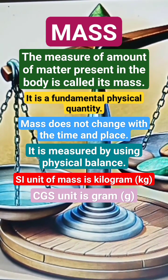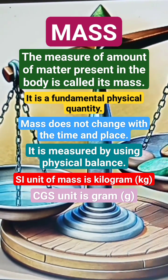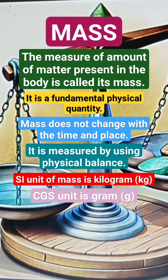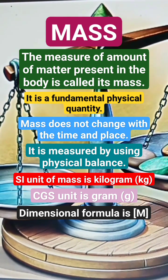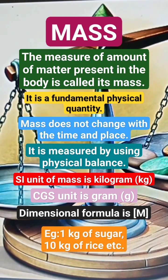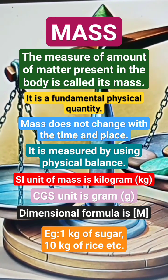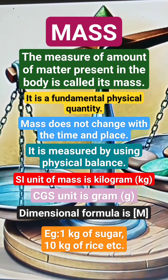The SI unit of mass is kilogram, the symbol is kg. The CGS unit is gram, the symbol is g. The dimensional formula is capital M. Examples of mass are 1 kg of sugar, 10 kg of rice, etc.